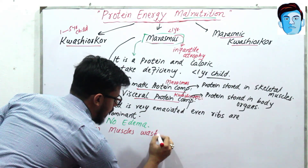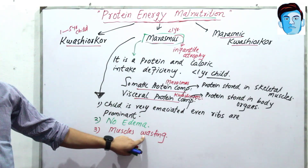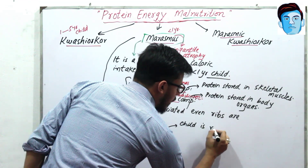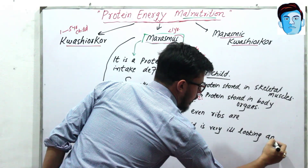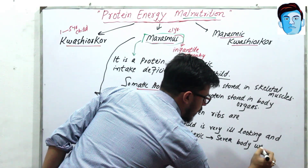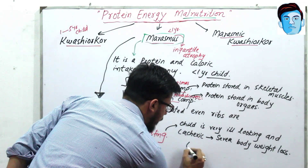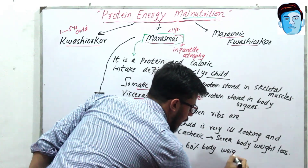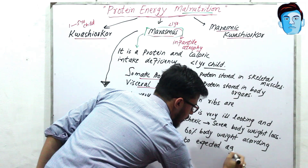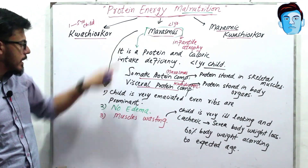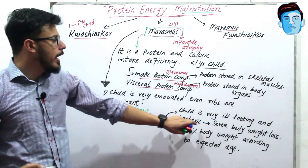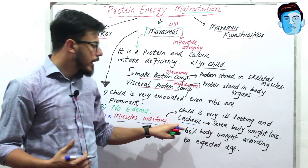In Marasmus the child is very ill-looking and cachexic, with severe body weight loss — even up to 60% body weight loss according to expected age. The most diagnostic and defining sign for Marasmus is that subcutaneous tissue loss is maximum. The child is very ill-looking, cachexic, and there is severe body weight loss of 60% according to expected age.